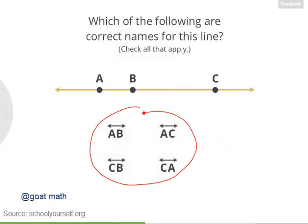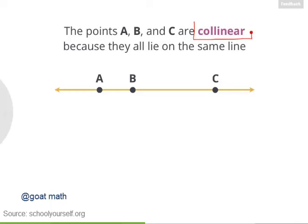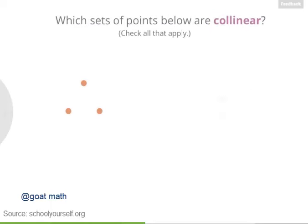All of those are correct names for this line. You can name a line after any two points on the line. Points that lie on the same line, like points A, B, and C, are called collinear. Take a look at these different sets of points — which of these are collinear? That is, which of these lie along a single line?